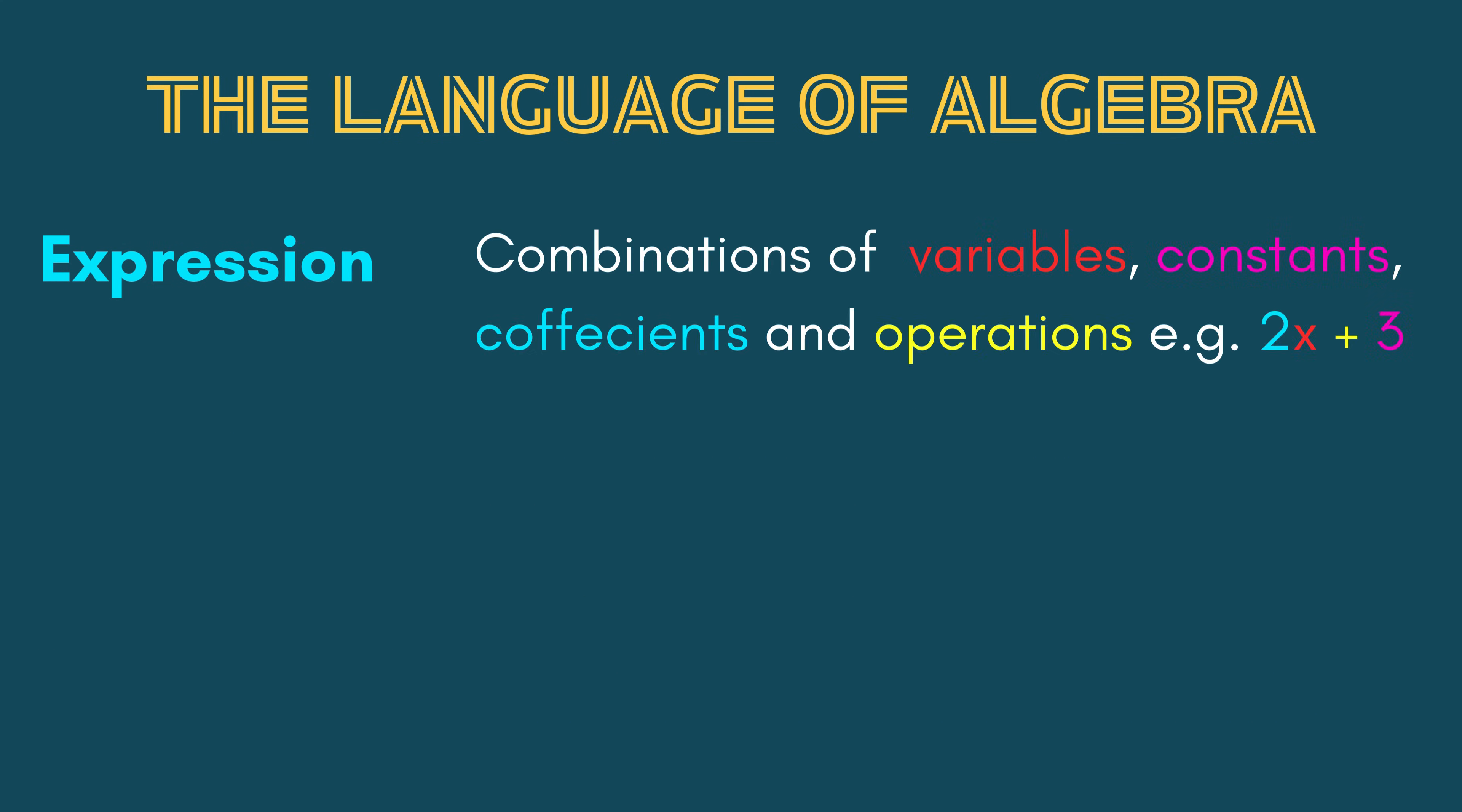Expressions are combinations of variables, constants, and operations like 2X plus 3. Equations, on the other hand, are mathematical sentences stating two expressions are equal, as in the case of X plus 2 equals 5.